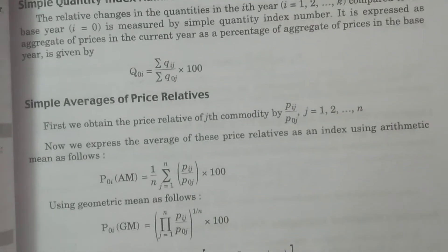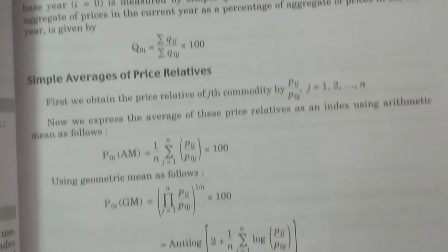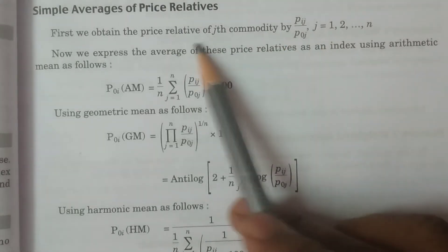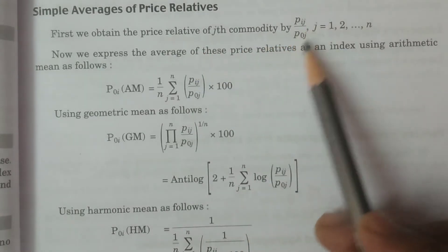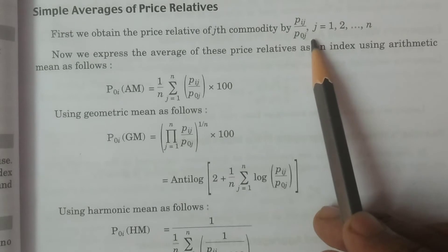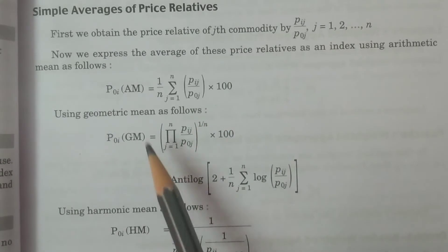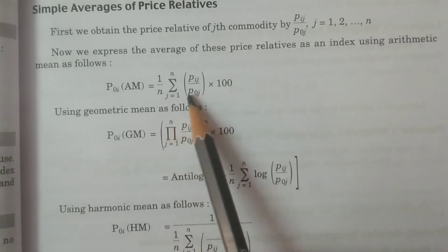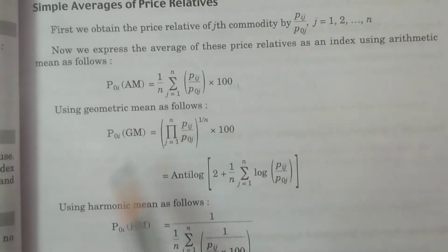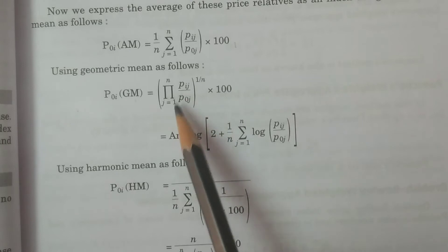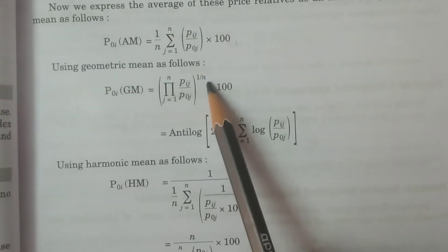Now, simple average of price relatives. The price relative for the Jth commodity is PIJ by P0J, for J equal to 1 to N, where J refers to commodity and I refers to the time period. Based on arithmetic mean: P0I (AM) = (1/N) summation PIJ by P0J into 100. Based on geometric mean: P0I (GM) = product of (PIJ/P0J) for J=1 to N, whole power 1/N, into 100.